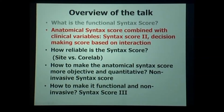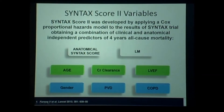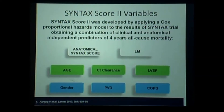The anatomical Syntax score combined with clinical variables — the Syntax score 2 — is a very good decision-making score based on interaction. It was published in the Lancet by my fellow Vasim Farouk, developed by applying a Cox proportional hazard model to the Syntax trial results, obtaining a combination of clinical and anatomical independent predictors of four-year all-cause mortality. You take the anatomical Syntax score, left main, age, creatinine clearance, ejection fraction, gender, peripheral vascular disease, and COPD — and you have the Syntax score 2.